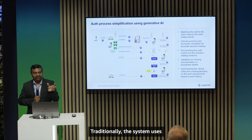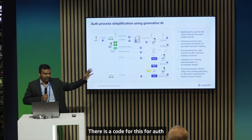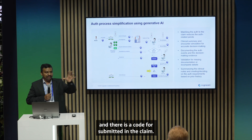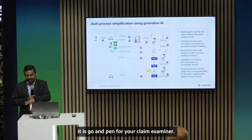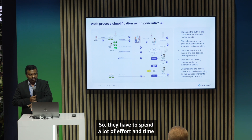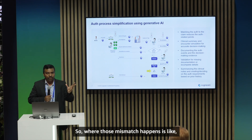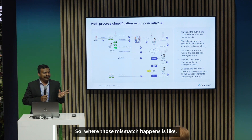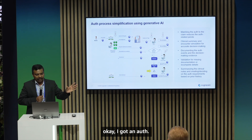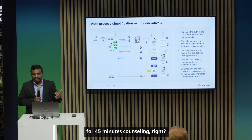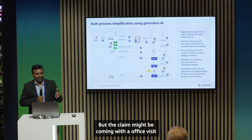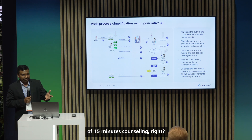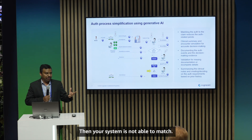Traditionally, the system uses a discrete algorithm — there is a code for the auth and a code submitted in the claim, and if they match, great; if not, it gets pended for a claim examiner who has to spend a lot of effort and time to analyze it. Where mismatches happen: for example, an auth might be for an office visit with 45-minute counseling, but the claim comes in with a 15-minute counseling office visit, and the system is not able to match them.